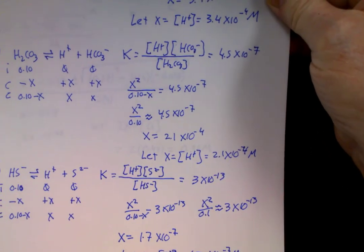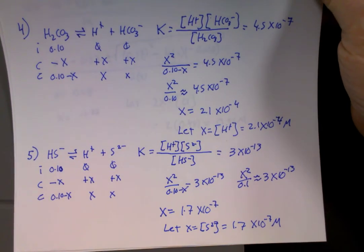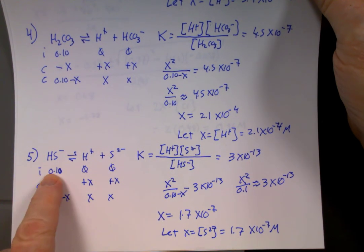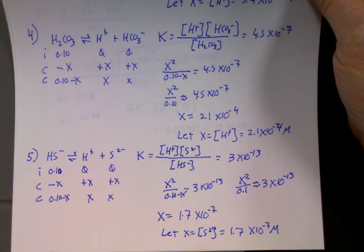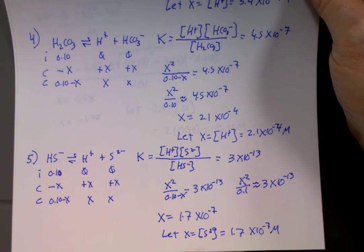And now finally, number 5. Take a look at it. It's the same reaction actually as number 2. We just changed the initial concentration to be 0.10 molar. So this time x is 1.7 times 10 to the negative 7th and the S2 minus concentration is 1.7 times 10 to the negative 7th molar.